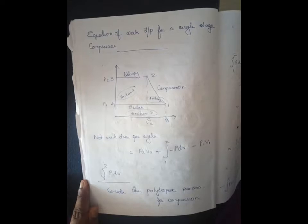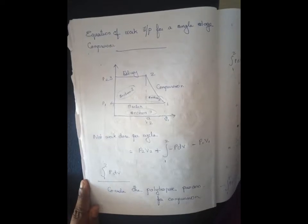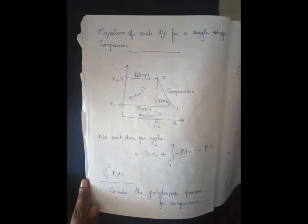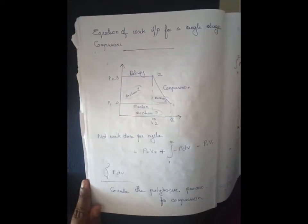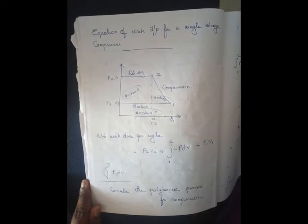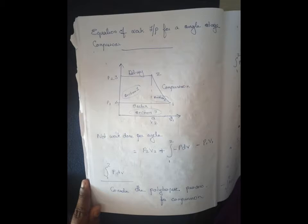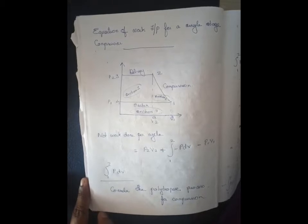Module 5: Reciprocating Compressor. Topics covered include: Schematic Diagram, Compressor Classification, and PV Diagram. We will analyze the video lecture.